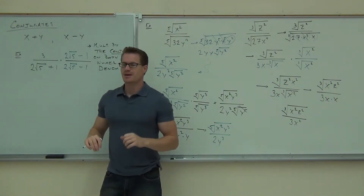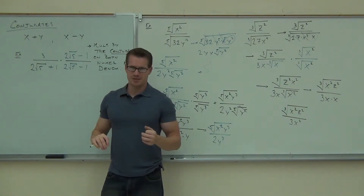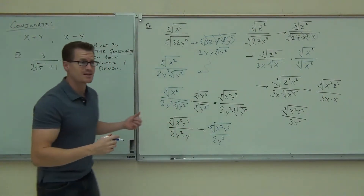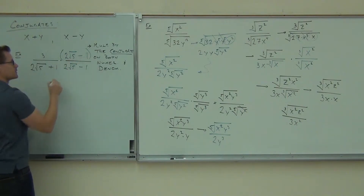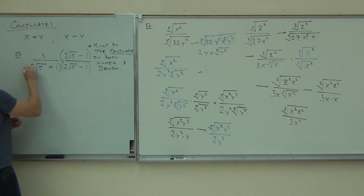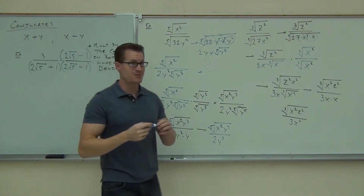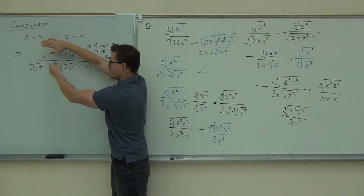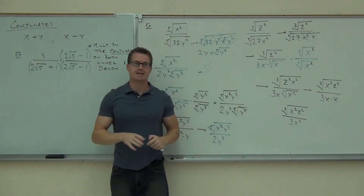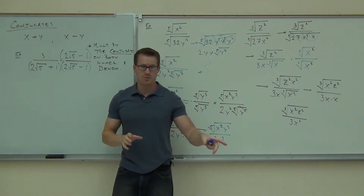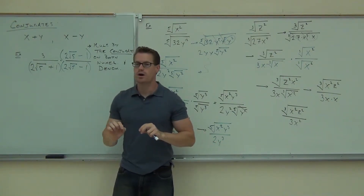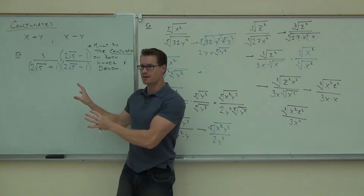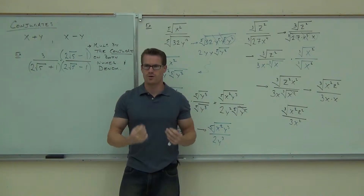Are you okay with this so far? Remember all that stuff we did with distribution? We FOILed out all those radicals. You know why we did that? It gets kind of nasty on those problems on your homework. You have a lot of things going on. Be careful. You've got to be rock solid on the distribution in order to get these problems correct. So be careful — don't go too fast. Write out all the steps.